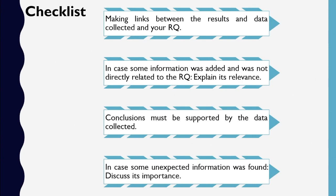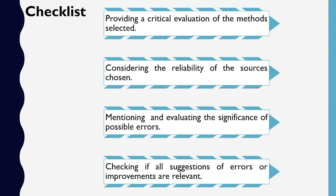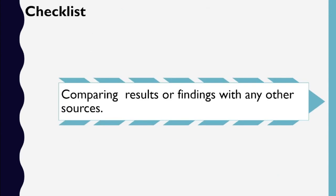As a checklist, the student should make sure he has answered all these questions: Has he made links between results, data collected, and the research question? If he included data or information not directly related to the research question, has he explained its importance? Are conclusions supported by the data presented? If he found unexpected information, has he discussed its importance? Has he provided a critical evaluation of the methods he selected? Has he considered the reliability of sources? Has he mentioned and evaluated the significance of possible errors that may have occurred in his research? Are all suggestions of errors or improvement relevant? If possible, has he compared his results or findings with any other reliable sources?